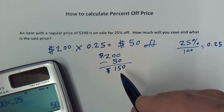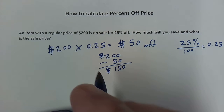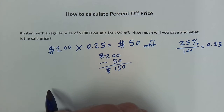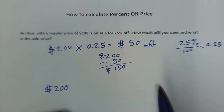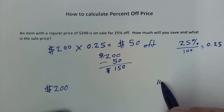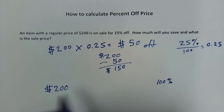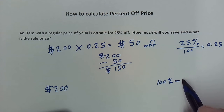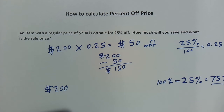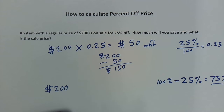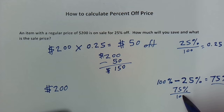Now I'm going to show you another way to do it. We're starting with the original $200 price and I want to find out the sale price in one step. A hundred percent is the full price — $200 — and we're going to take off 25%. So I take 100% and subtract 25%, which leaves 75%. The sale price is going to be 75% of the original price, so 75% becomes 0.75 as a decimal.